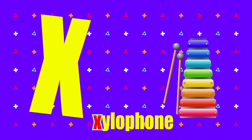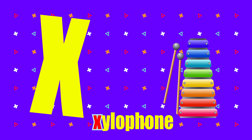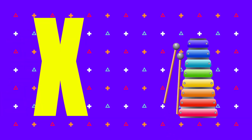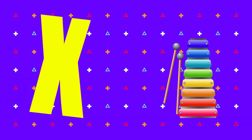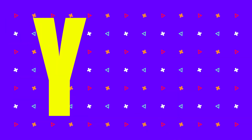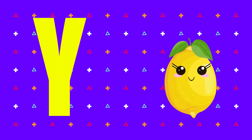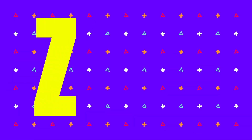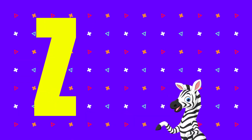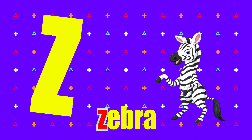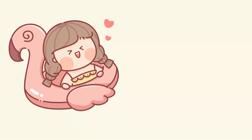X is for xylophone, z-z-xylophone. Y is for yellow, ye-ye-yellow. Z is for zebra, z-z-zebra.